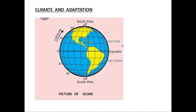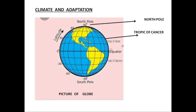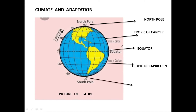Looking at the globe, it has a north pole and south pole, which come under polar regions. There is the Tropic of Cancer, then the equator in the middle, then the Tropic of Capricorn, and the south pole. The north and south poles are the coldest regions of the earth.